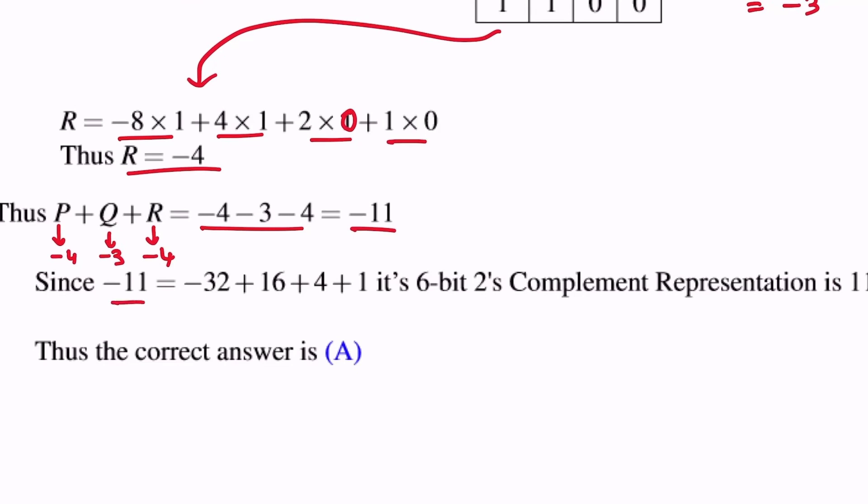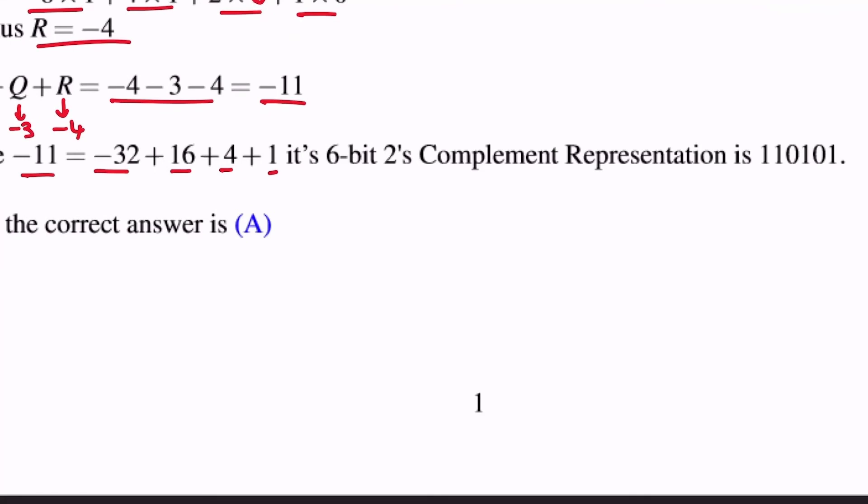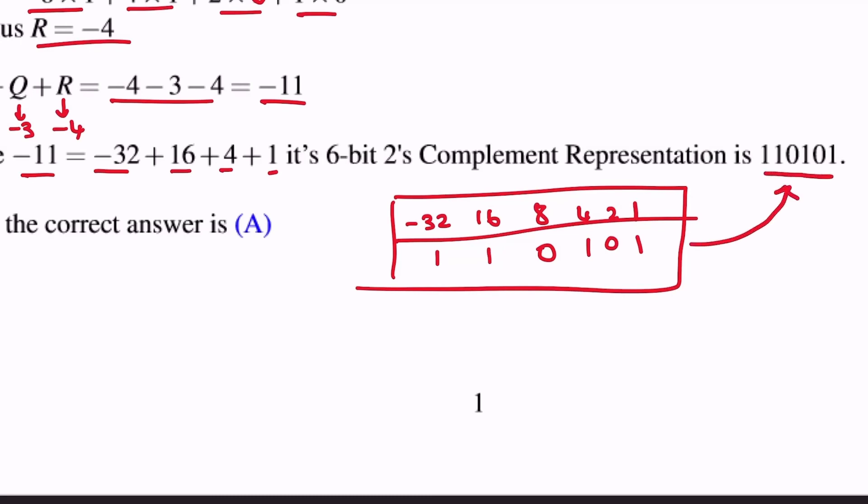And since minus 11 equals minus 32 plus 16 plus 4 plus 1, it has the 2's complement representation with bit positions minus 32, 16, 8, 4, 2, 1. This is there, this is there, this is not there, this is there, this is not there, this is there, which gives us 110101 as its 6-bit 2's complement representation.